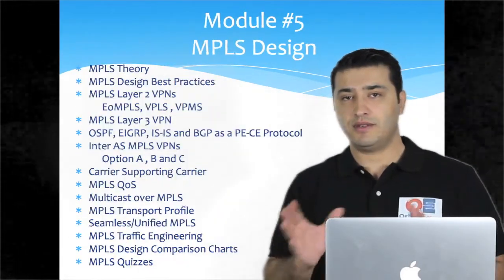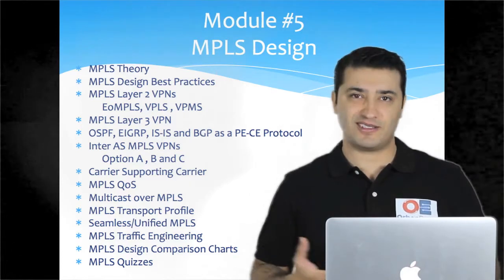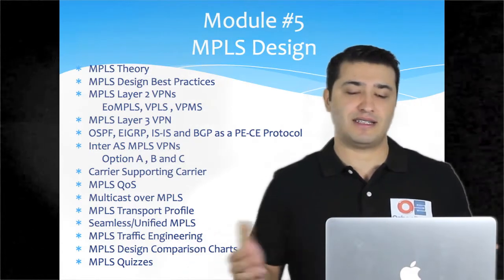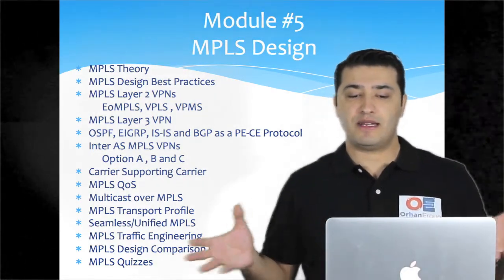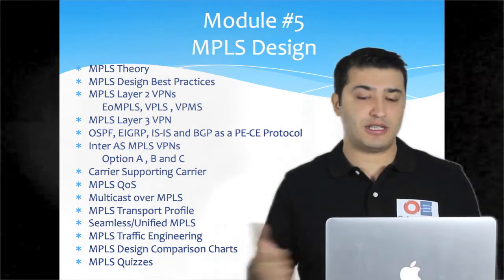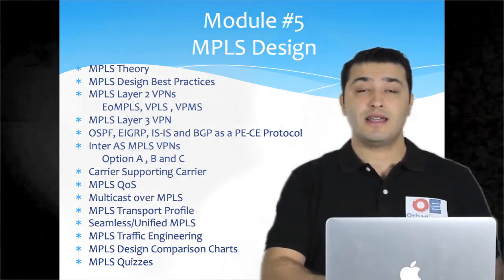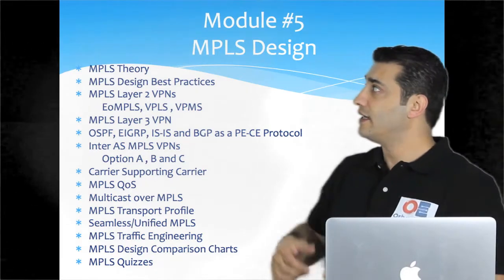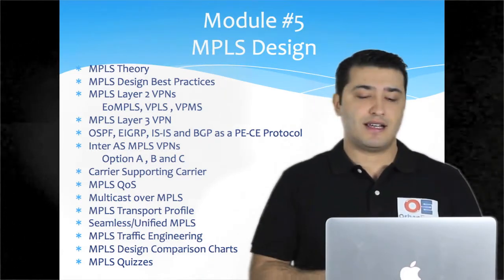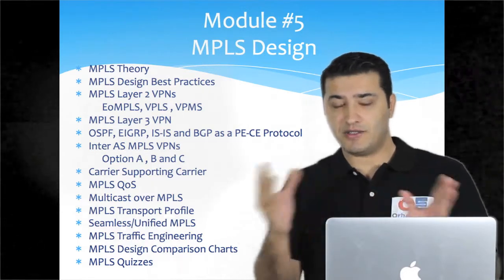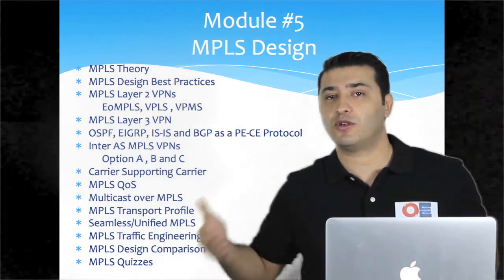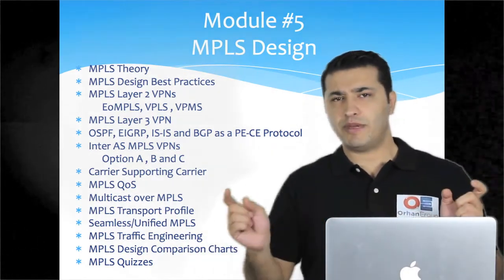After BGP, we will start MPLS design — probably the most important topic in the Cisco CCDE exam, both written and practical. Topics include what is MPLS, LSPs, pseudowires, encapsulation, LSP hierarchy, unidirectional and bidirectional LSPs, point-to-point and point-to-multipoint LSPs. We will also cover MPLS applications like Layer 2 MPLS VPNs, Layer 3 MPLS VPNs, VPWS, VPLS, VPMS, Layer 3 MPLS VPN design and theory, and OSPF, IS-IS, and EIGRP as PE routing protocols in MPLS L3 VPN.